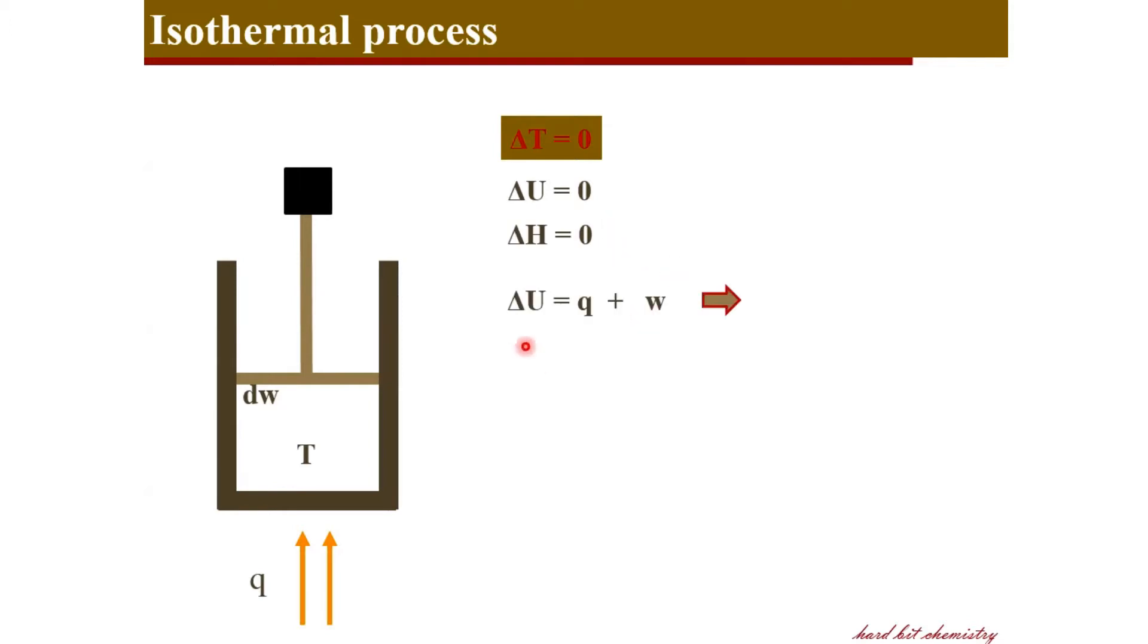According to the first law, we will reach that as the change in internal energy is zero, we can say heat is the negative of work, or work and heat balance each other during an isothermal process.